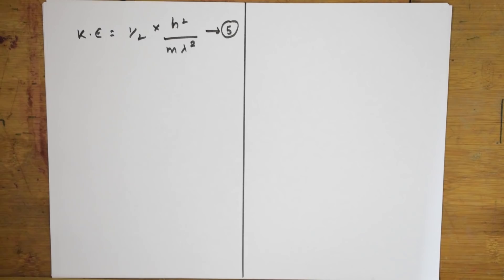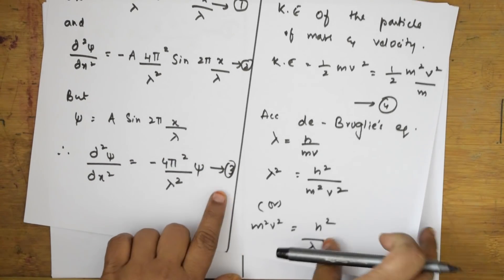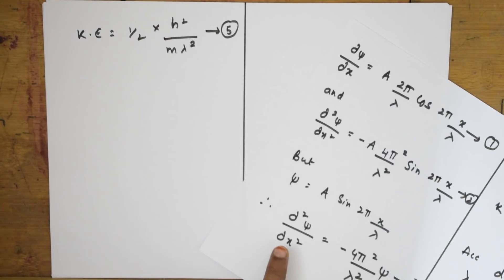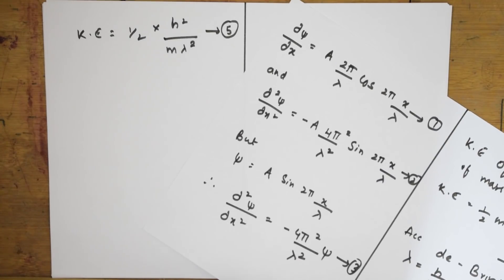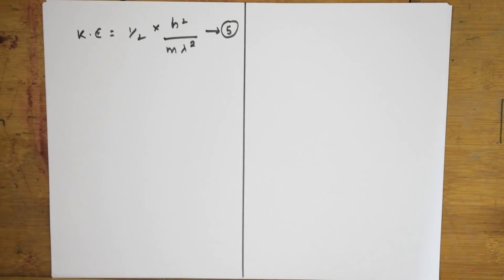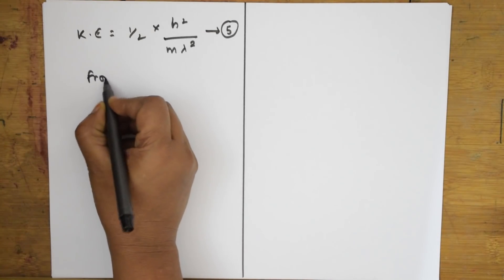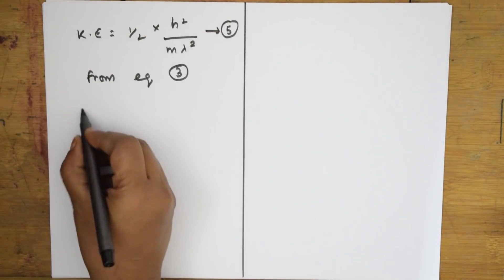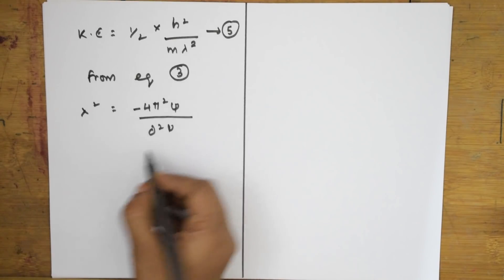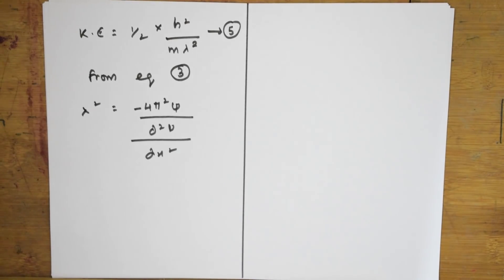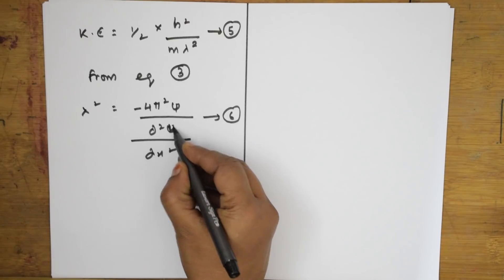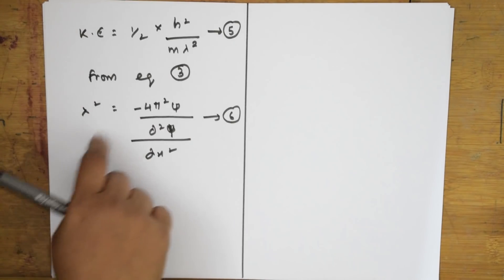We also have equation three. From equation three I can extract λ²: λ² = −(4π²ψ)/(d²ψ/dx²). Let us call this equation six.